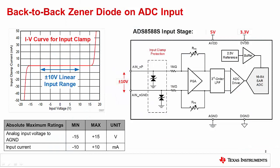This slide shows an analog front end with an internal back-to-back Zener diode type input protection clamp. Before taking a closer look at this clamp, let's discuss why a simple ESD diode will not work for this device. Notice that this device has an input voltage range of plus minus 10 volts, but the analog supply is only 5 volts. In the case of an ESD diode, it is connected between the input and the power supply so that the input voltage is always clamped to the power supply voltage plus a diode drop. If an ESD diode was used for this device, the input voltage would be clamped to 5.3 volts. So clearly, we need a different type of clamp when the input voltage swings beyond the power supply rails. This is why a back-to-back Zener diode structure is used.